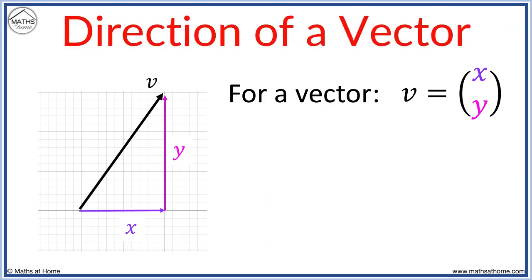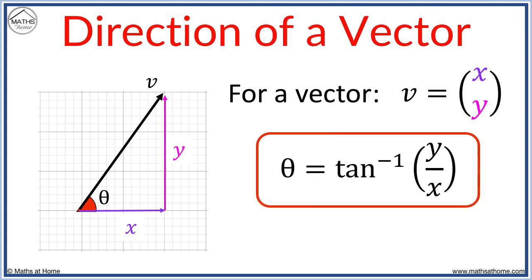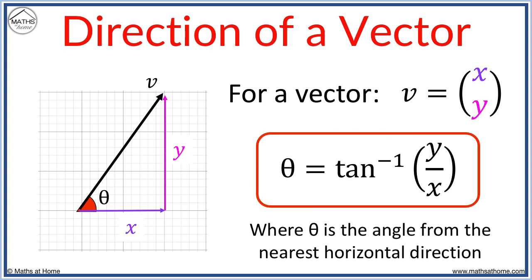The direction of a vector is the angle it makes compared to the positive x-axis direction. From trigonometry, it is equal to arc tan of y over x. The angle found is the angle from the nearest horizontal direction.